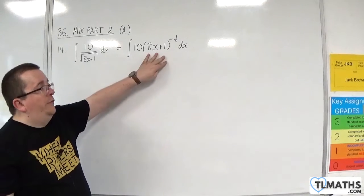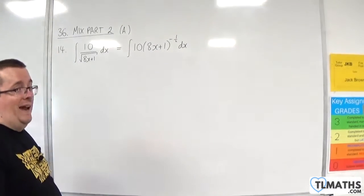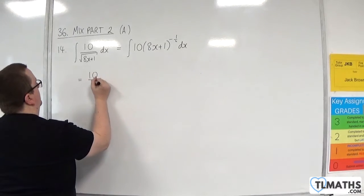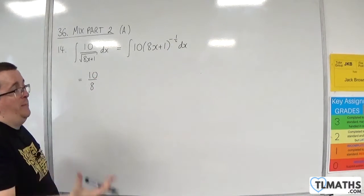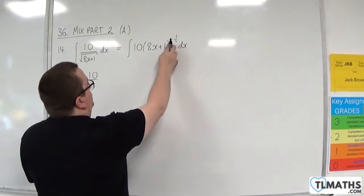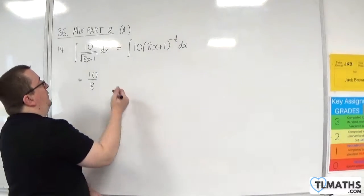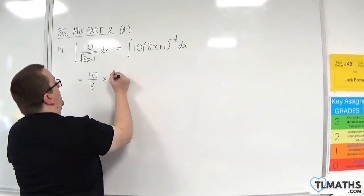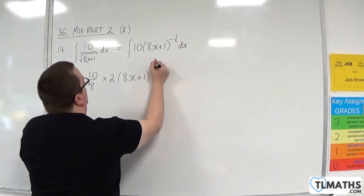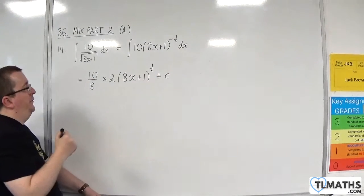So the derivative of the inside is 8. At the front we've got 10, so we've got 10 eighths of what we need. So 10 over 8. We're also going to be adding 1 to the power and dividing by the new power. We're going to be dividing by half, which is the same as multiplying by 2. So we'll have 8x plus 1 to the half, plus a constant c.